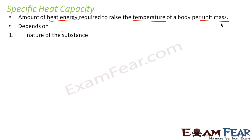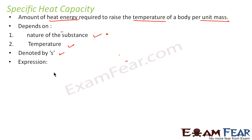Specific heat capacity depends on the nature of the substance, so it is not a uniform value all the time — depending on the substance, the value of specific heat capacity changes. Similarly, it also depends upon temperature, that means by how much value you want to increase the temperature. It is denoted by a small s. How do we express specific heat capacity mathematically? Specific heat capacity is expressed as 1 by m times delta Q by delta T, where m is nothing but mass of the body. Delta Q is the amount of heat energy, and delta T is the temperature rise per unit mass.